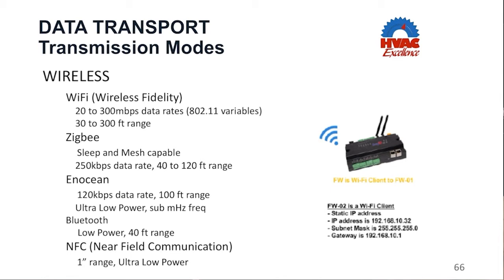The final two wireless methods are Bluetooth — familiar from many consumer devices, a low power wireless network with a range of about 40 feet — and NFC, or near field communication, which has a one-inch range and is ultra low power.